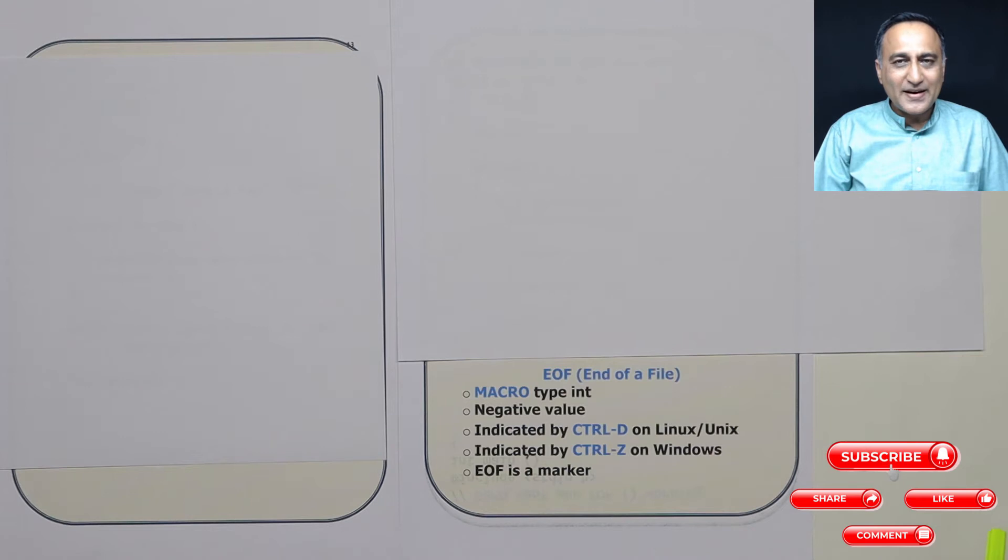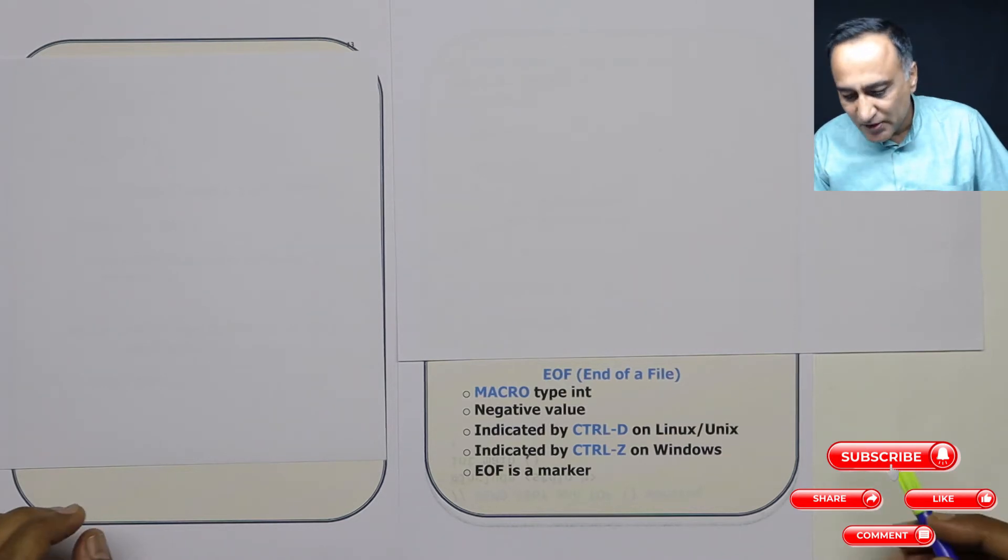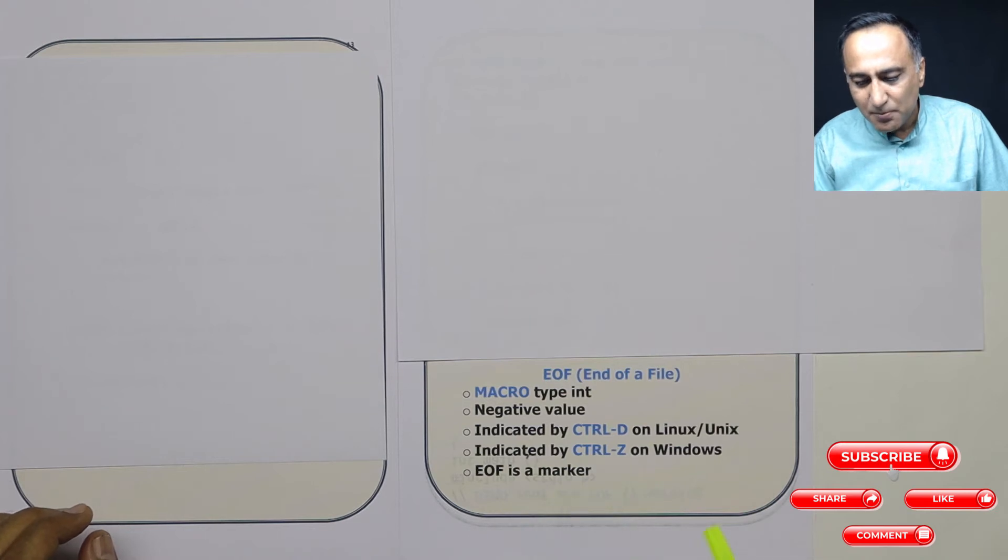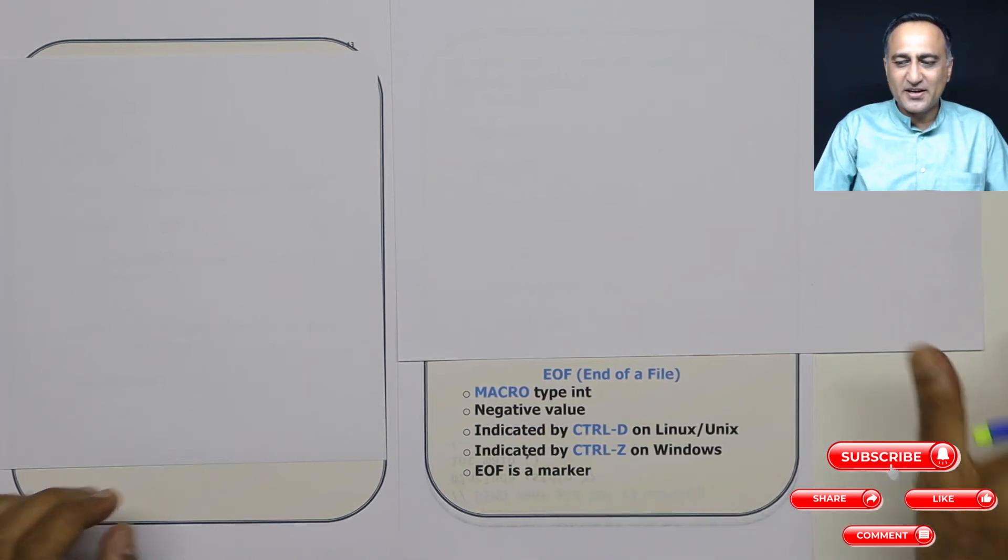This concept of end of file or end of input shall be absolutely clear when you take a look at the demo which follows this particular video session. So please watch the demo after this session to get complete conceptual understanding on what is the end of a file. In simple words, end of a file is a special symbol or a keyboard combination which indicates that I am not going to give any more input. EOF is a marker. Generally, it has a negative value.